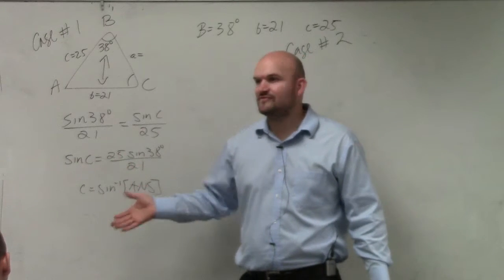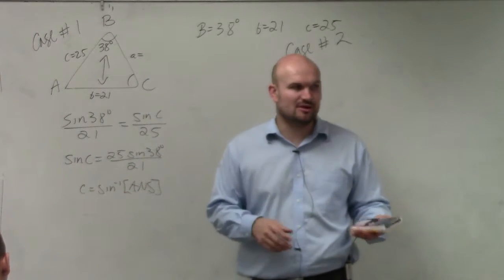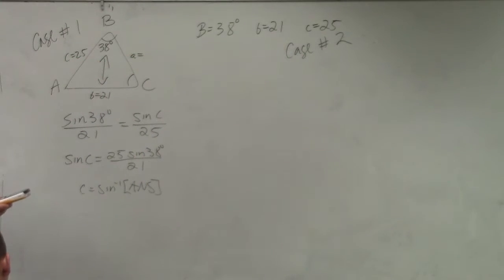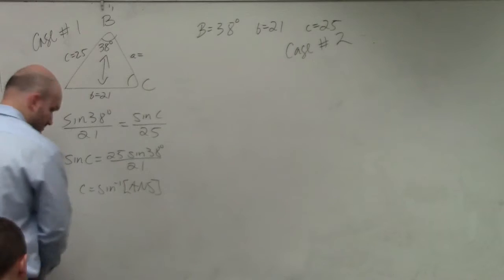you can type this all into your calculator. But it's not that much slower, just to type it in one by one following the order of operations. Just do 25 times the sine of 38, enter, divide by 21, enter, and then do sine inverse of that last answer, enter. That really wasn't that much slower, was it? And I got 47.133.